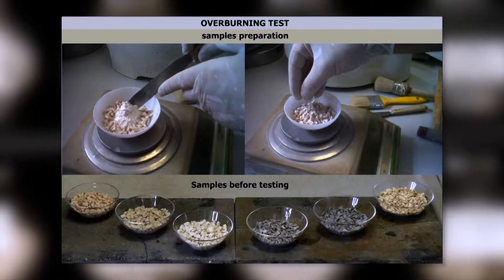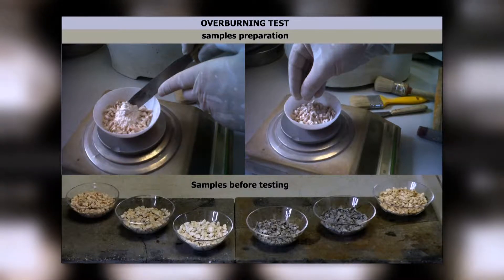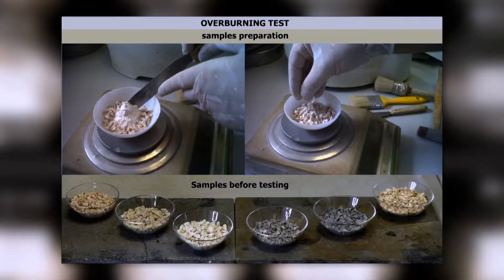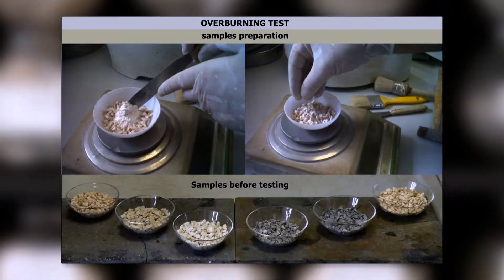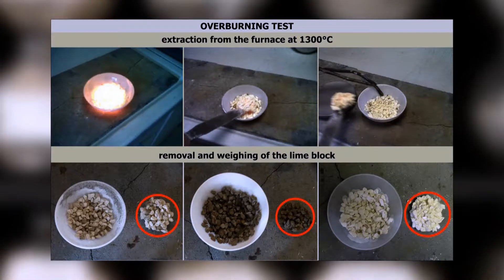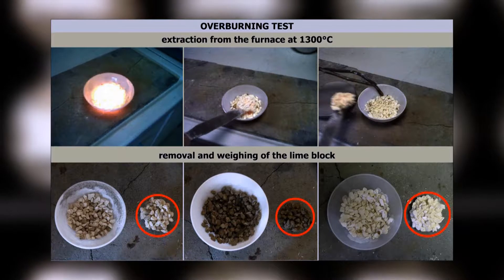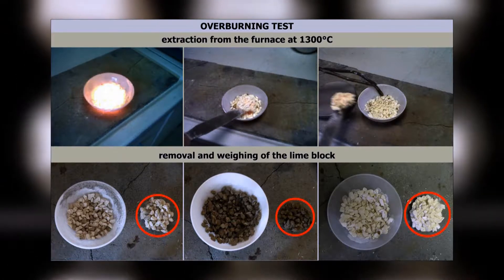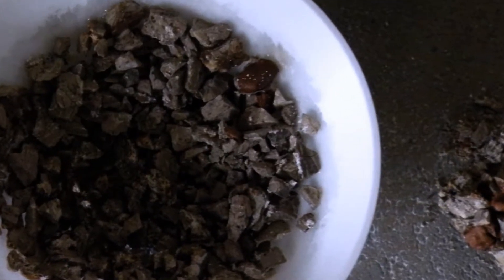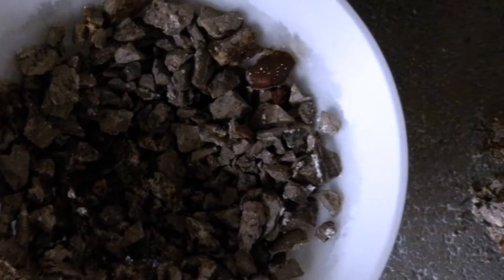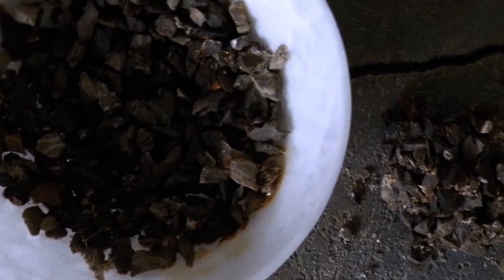The over-burning test at 1300 degrees centigrade, according to the internal method invented by Cimprogetti, allows us to predict and simulate the stickiness and the agglomeration of particles. This test is recognized worldwide by many lime producers as a standard for testing lime agglomeration in twin-shaft regenerative, TSR, kilns.